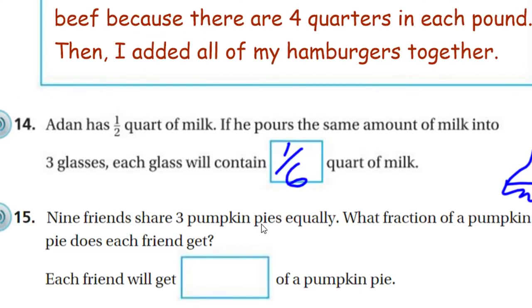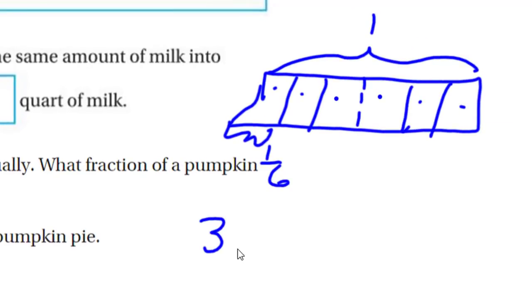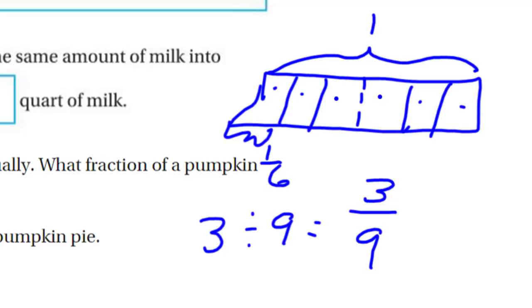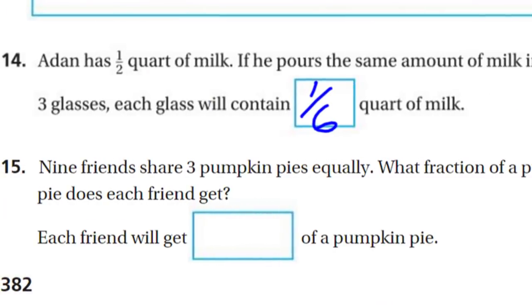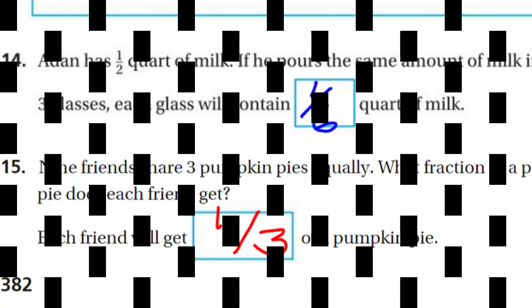Last problem: nine friends share three pumpkin pies equally. What fraction of pumpkin pie does each friend get? We're taking three pumpkin pies as our dividend and dividing by nine friends. So we write that as three over nine. We have a common factor of three, so we divide three out of both numerator and denominator: three divided by three is one, nine divided by three is three. That gives us one third. So each friend will get one third. And we're finished, my friends — live long and prosper!